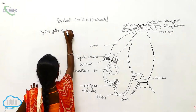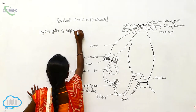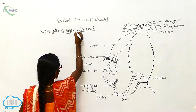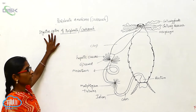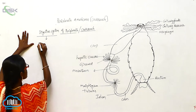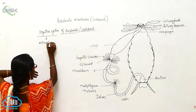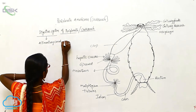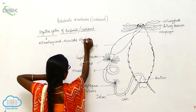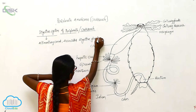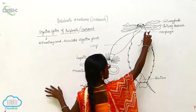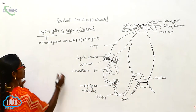The digestive system of Periplaneta, or cockroach. The digestive system includes the alimentary canal and associated digestive glands. The alimentary canal starts from the mouth to the anus.